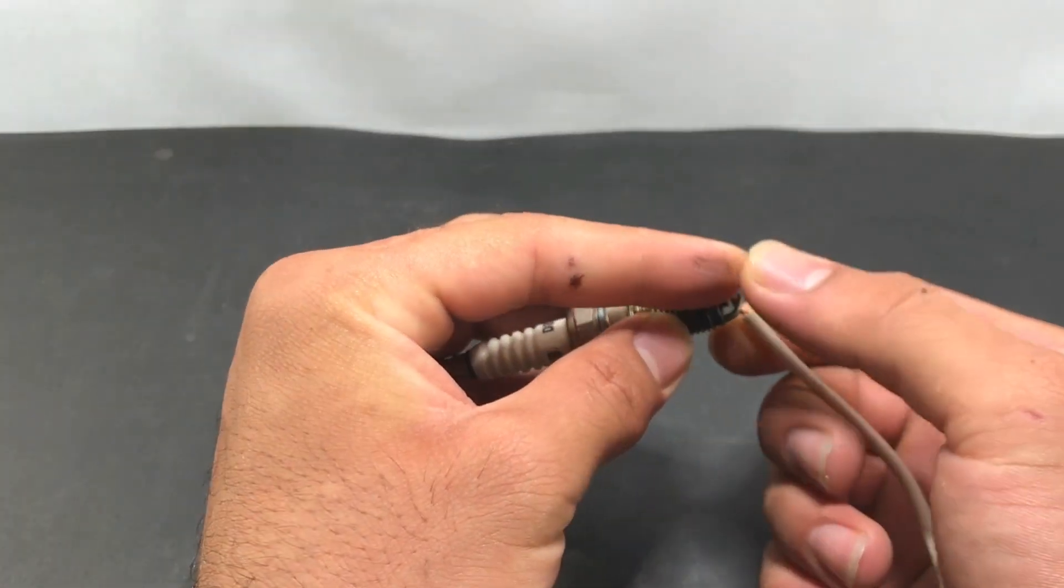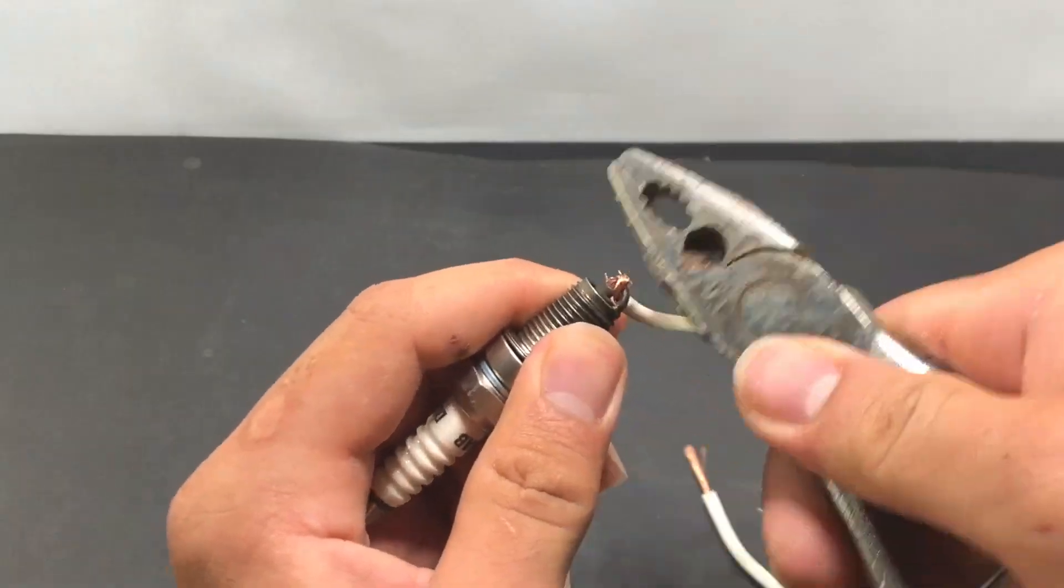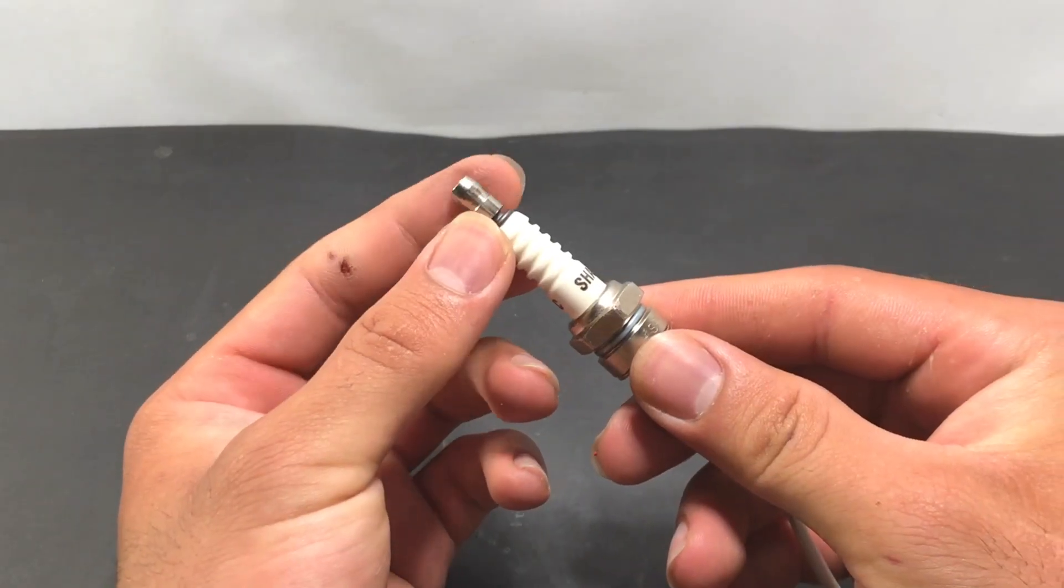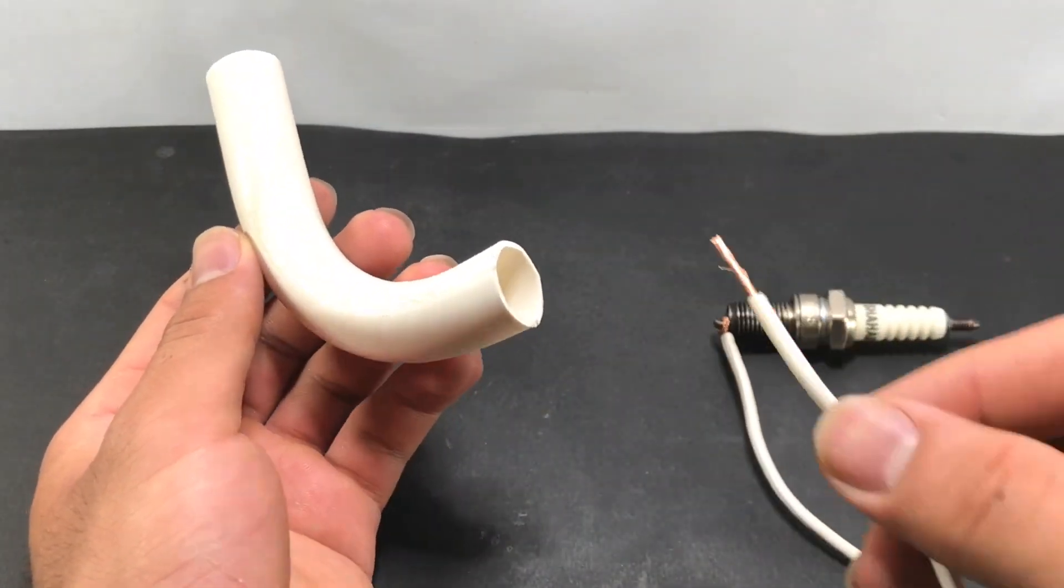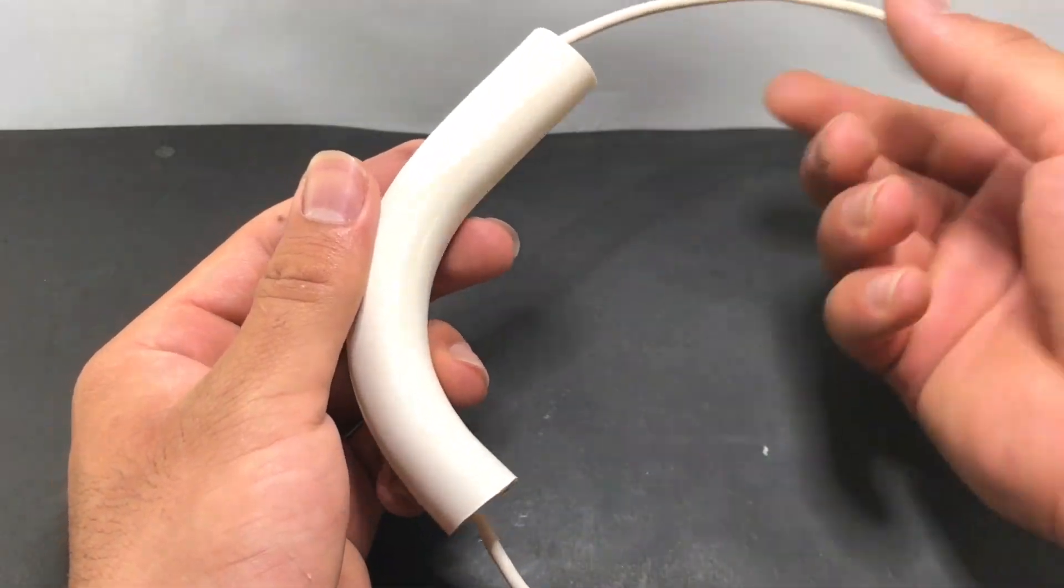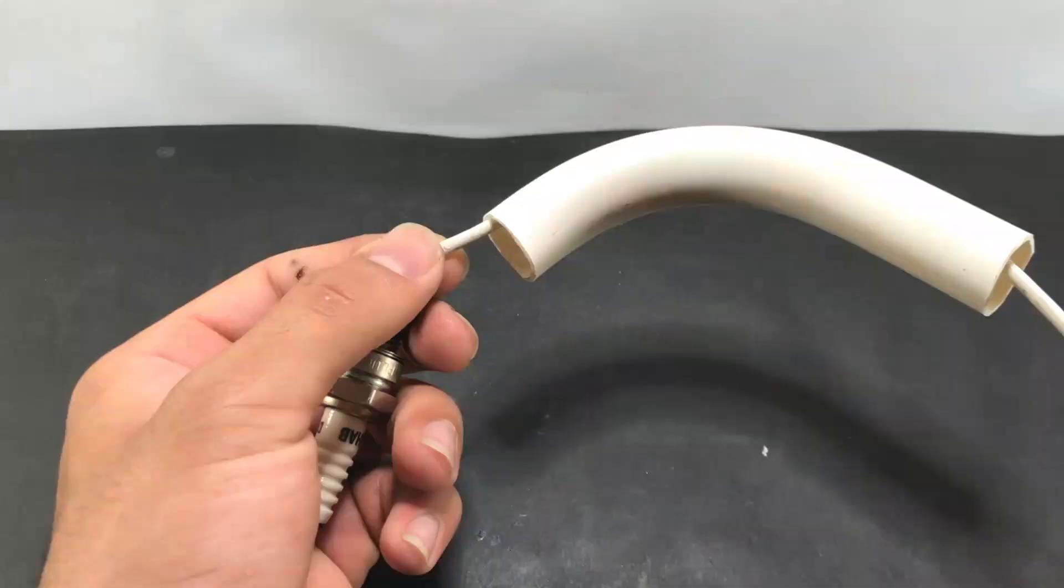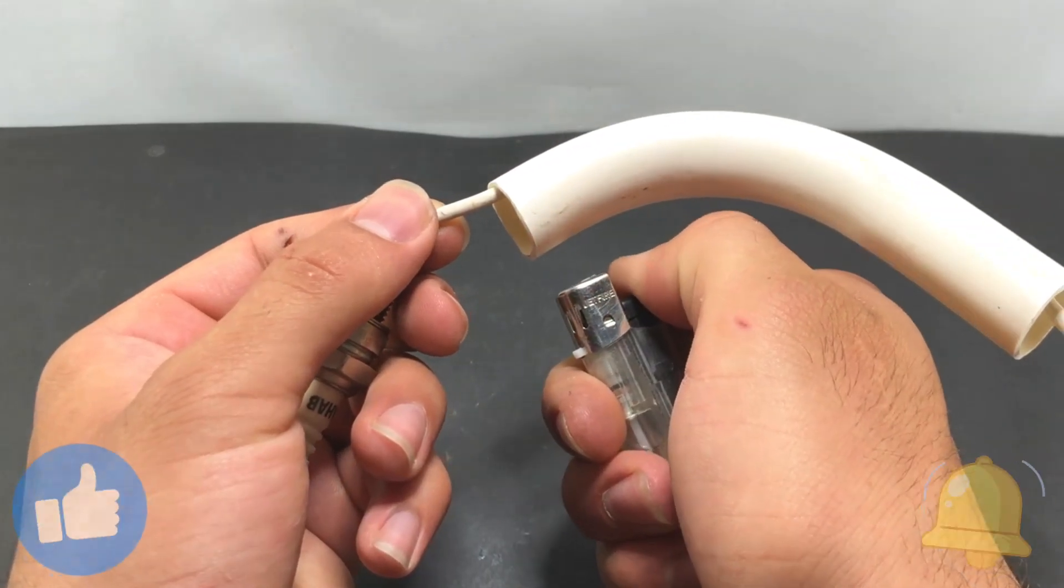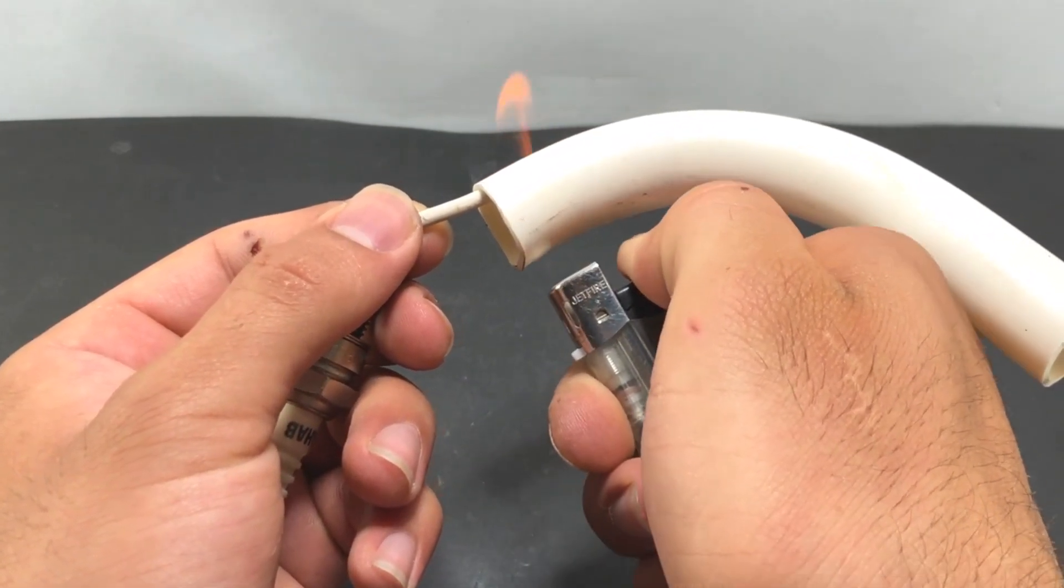Connect the wire to the end of the spark plug where it sparks. We use various types of PVC pipes. We heat the pipe so that we can place the spark plug in it.